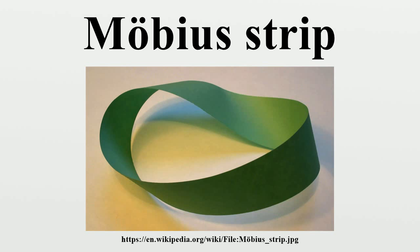There are an infinite number of topologically different embeddings of the same topological space into three-dimensional space, as the Möbius Strip can also be formed by twisting the strip an odd number of times greater than one, or by knotting and twisting the strip, before joining its ends. The complete open Möbius Band is an example of a topological surface that is closely related to the standard Möbius Strip, but that is not homeomorphic to it.